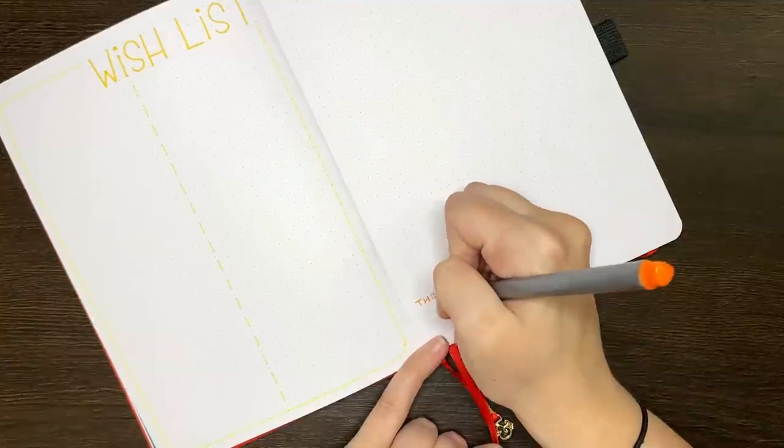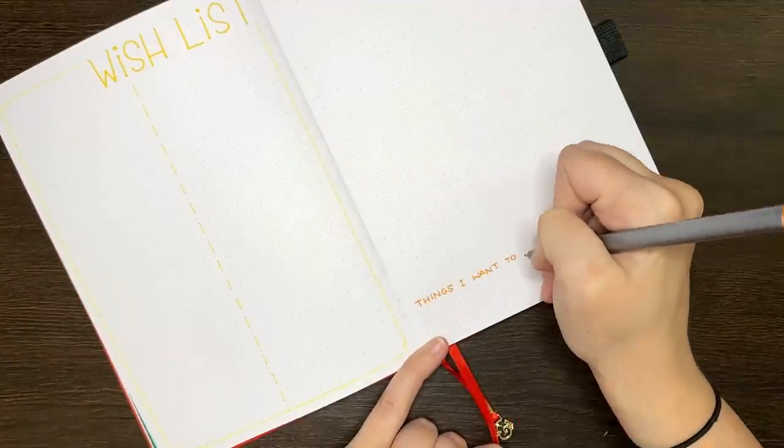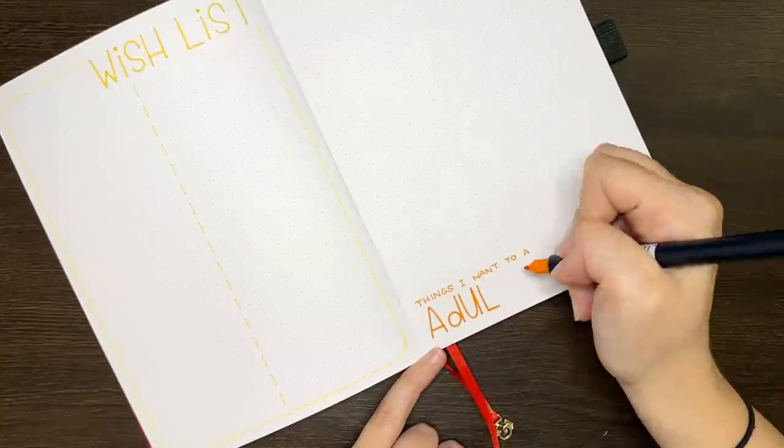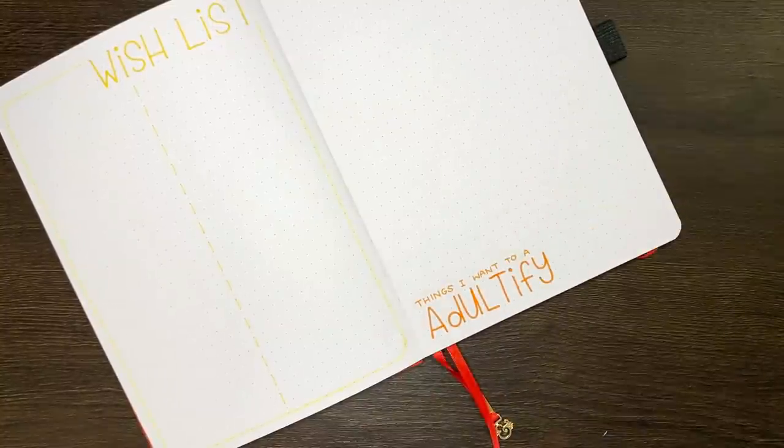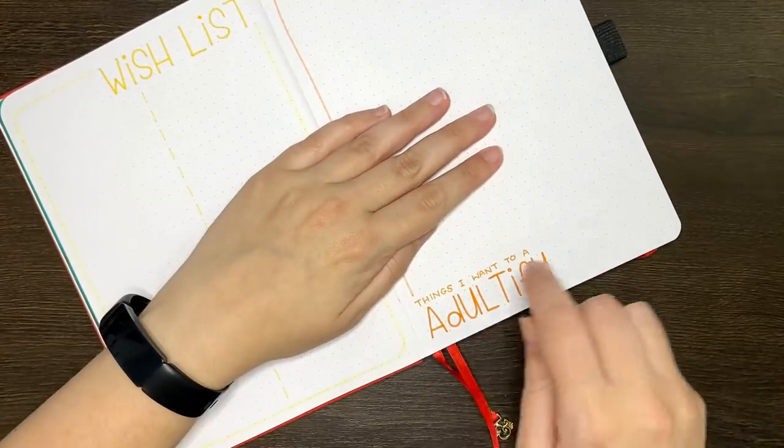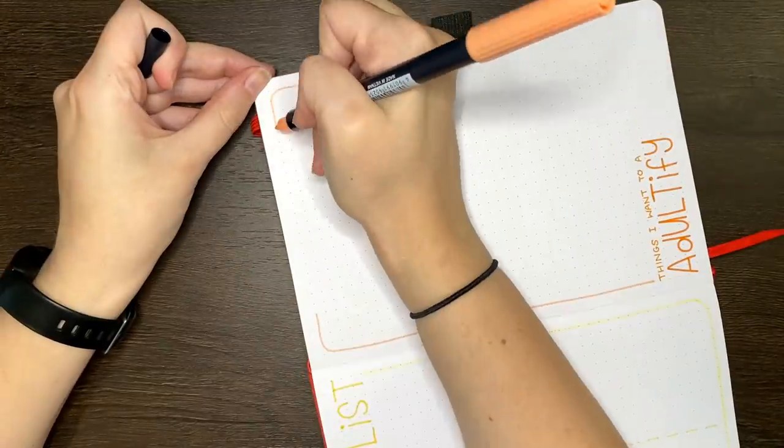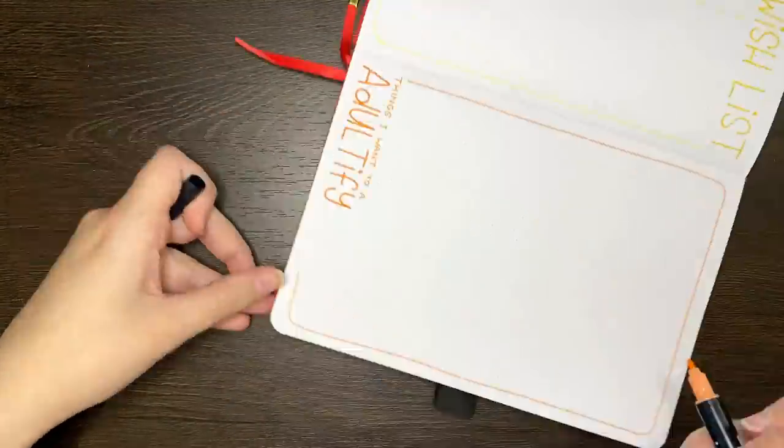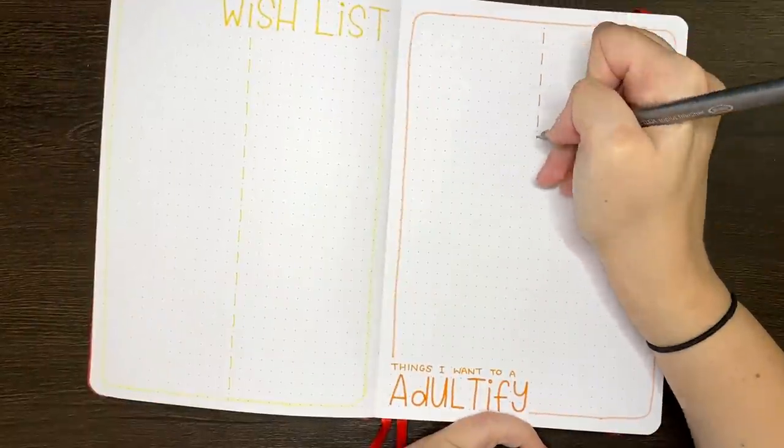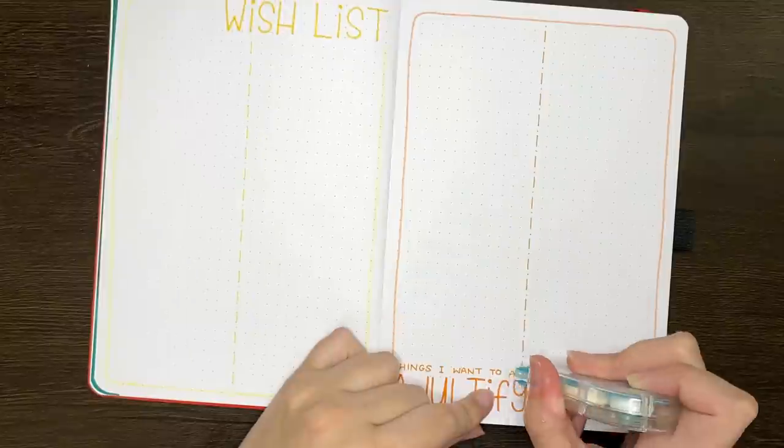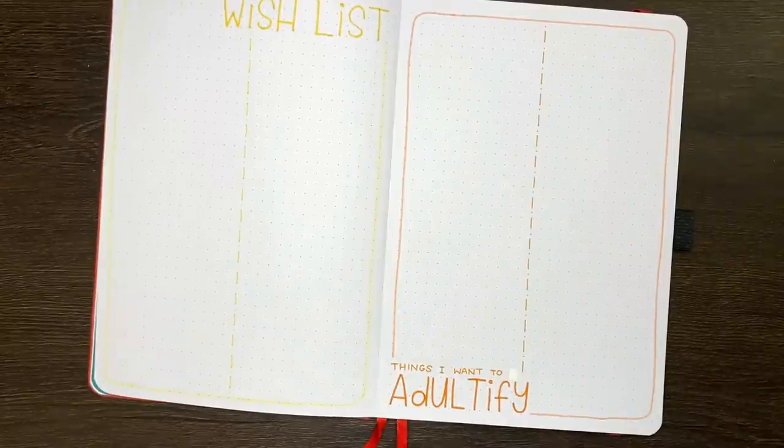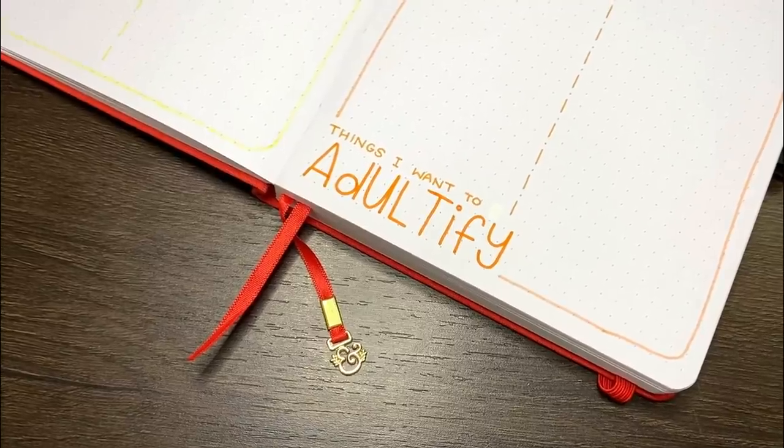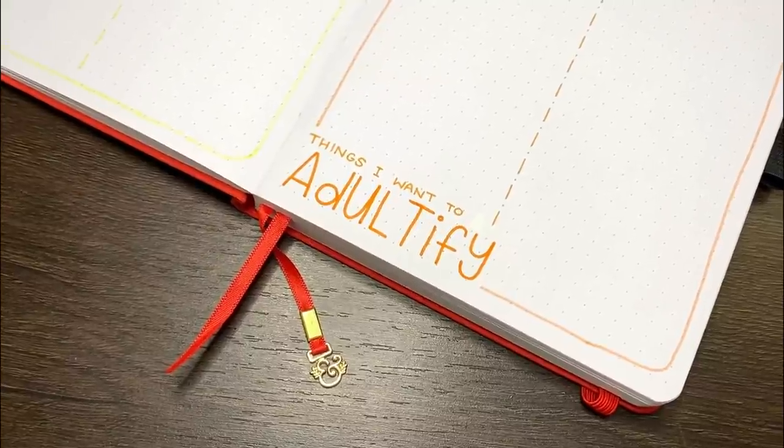So for instance, I might want to adultify my bedroom furniture, or get a coffee table, or get better drawer dividers for my cutlery drawer, that kind of stuff. Whereas my wishlist would be more for things that are probably a little bit more fun. Or at least what's conventionally considered to be fun. So maybe games that I want to buy, stationery that I want to get, electronics, that kind of stuff.